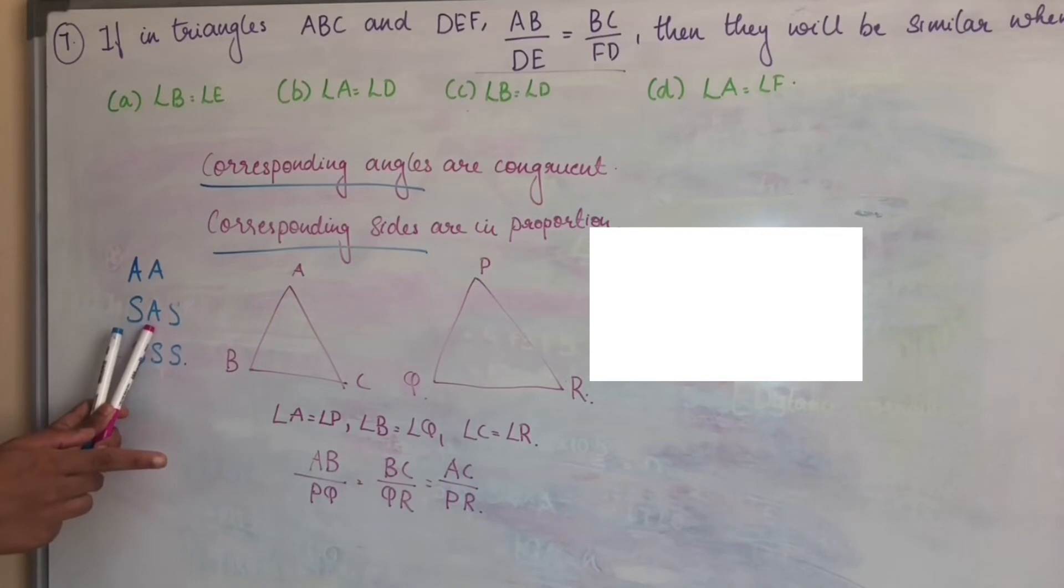we can say that two triangles are similar. SAS criteria. Two sides proportional and third side proportional, we can say that two triangles are similar.